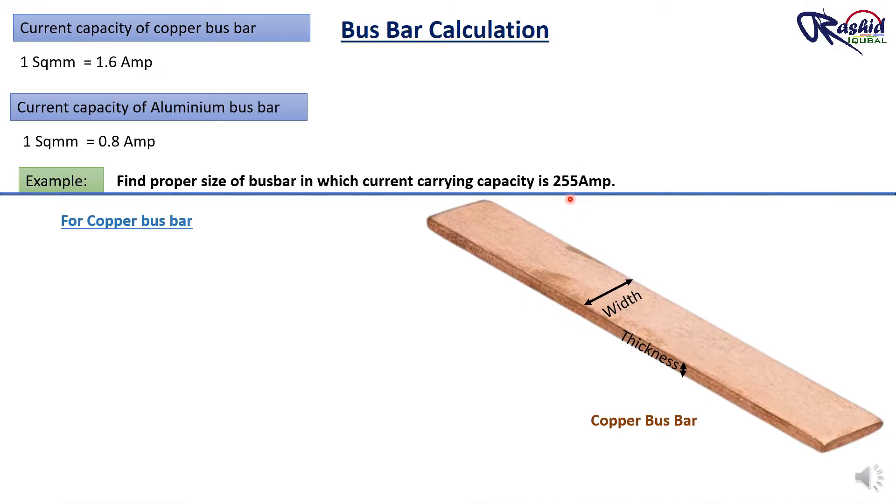And 1 square mm copper current carrying capacity is 1.6 ampere as I said. Through these inputs, we can calculate total area of copper which can carry 255 ampere current. So area of copper conductor equal to 255 divided by 1.6 equal to 159.3 square mm. That means we required 159.3 square mm copper to carry 255 ampere current.